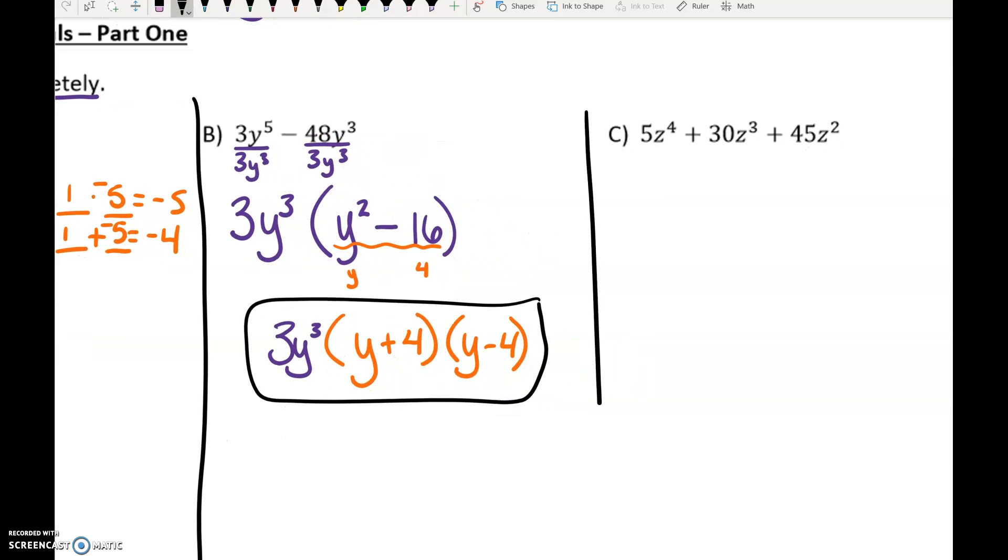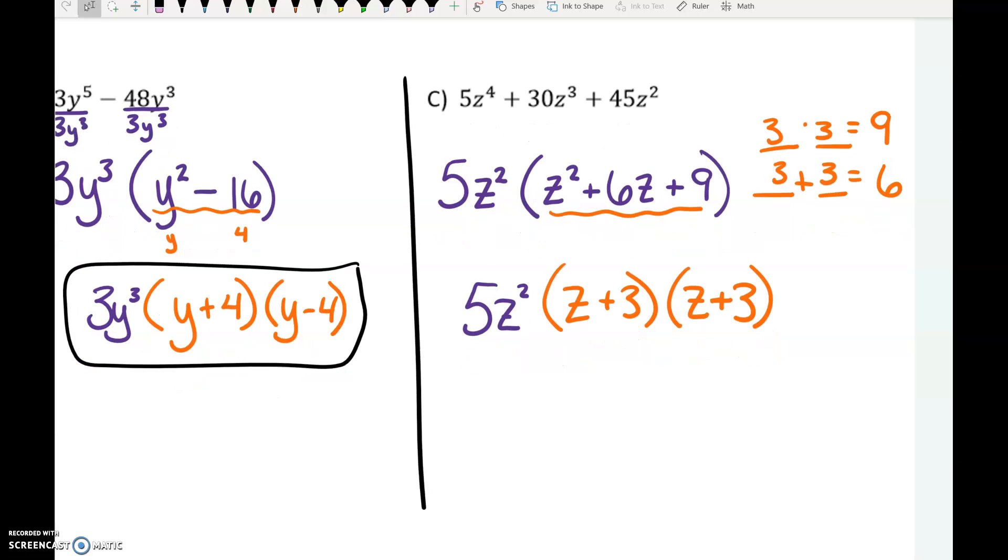Why don't you pause and try C on your own. So you can divide 5z squared out of all three of those terms. And then the trinomial that's left factors into z plus 3, z plus 3. Because z plus 3 and z plus 3 are exactly the same, you can write this as z plus 3 squared.